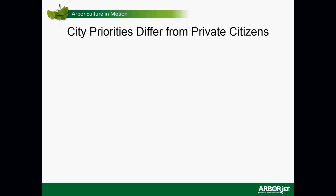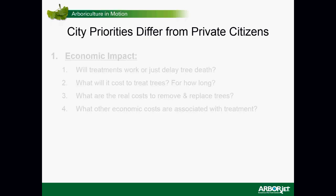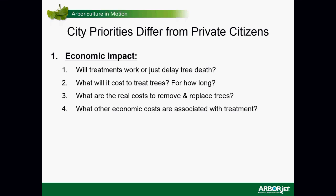City priorities differ enormously from those of private citizens. Cities consider economic impact as a key indicator: will treatments work or just delay tree death? What will it cost to treat trees, and how long will I need to treat them? What are the real costs of removing and replacing trees? Many times I've heard, 'we've got the chippers and we've got the people already working here, so we'll just cut those trees down' — but it's often significantly underestimated. What other economic costs are associated with treatment? Those factors matter as well.